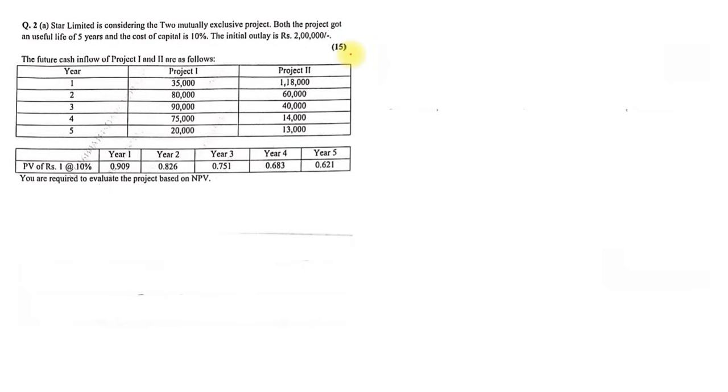The very first practical question asked in this paper was Question Number 2A. Star Limited is considering two mutually exclusive projects. Both projects have a useful life of five years, the cost of capital is 10 percent, and the initial outlay is 2 lakhs. Future cash inflows for Project 1 and Project 2 are given, along with PV factors at 10 percent for five years. You are required to evaluate the projects based on the NPV method.